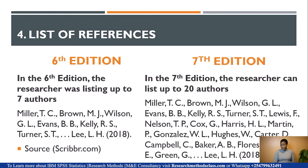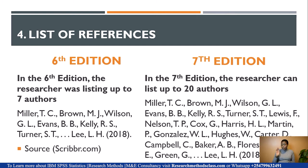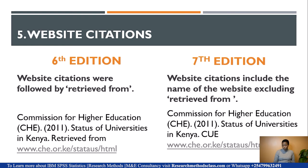Regarding the list of references, the APA 6th edition required mentioning up to seven authors. When you reached the sixth author, you placed an ellipsis and then showed the last author as the seventh. In the 7th edition, you can list up to 20 authors in the reference list.